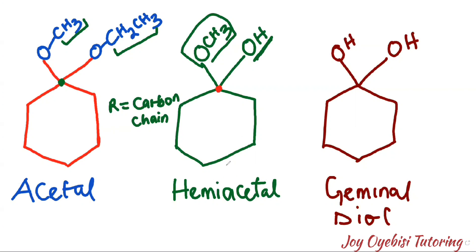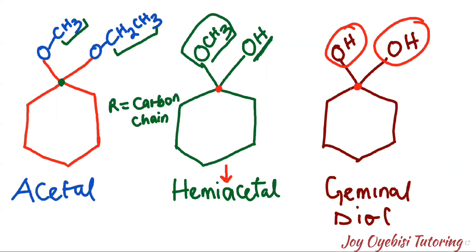For geminal diol, you have two OH groups attached to the same carbon, and that is why we call that a geminal diol. Generally, diols are compounds that have two OH groups, but this is called a geminal diol specifically because both OH groups are attached to the same carbon.